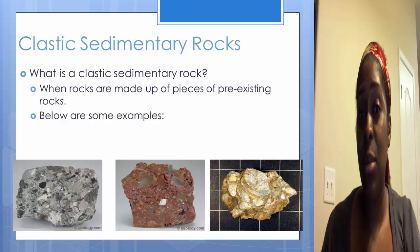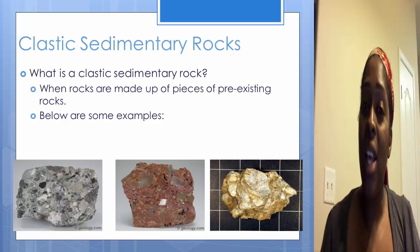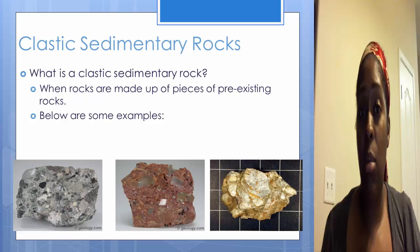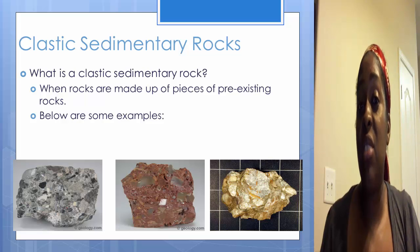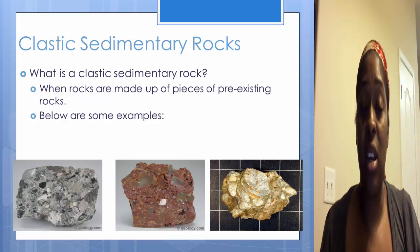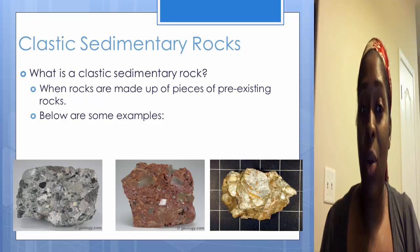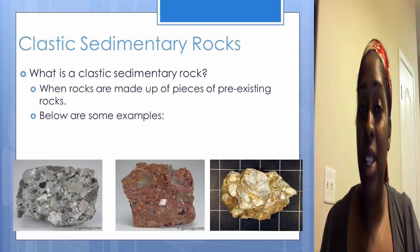Clastic sedimentary rocks: what a clastic sedimentary rock is, is basically when rocks are made up of pieces of pre-existing rocks. So it's a bunch of little rocks that come together to form a new sedimentary rock. Below are a couple of examples.